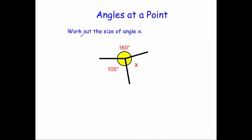The first question says: work out the size of angle X. We've got three angles here — 160 degrees, 105 degrees, and one marked X. To find this missing angle, we know that all three of them will add up to 360 degrees. So if we add the two that we're given, that will tell us what they add up to, and if we take that away from 360, that will tell us what's left for X.